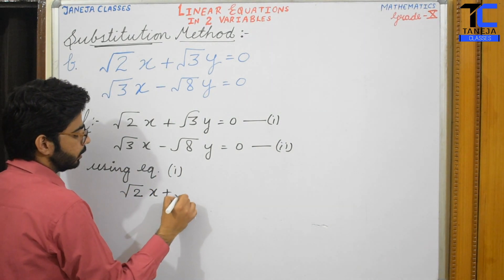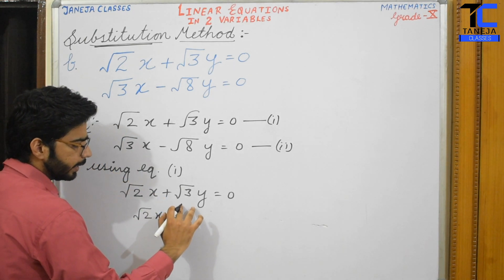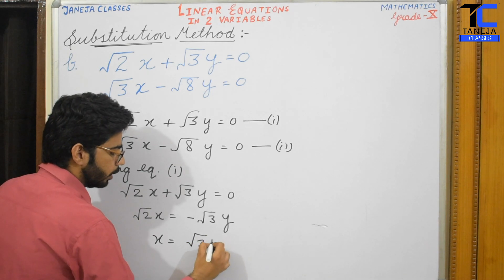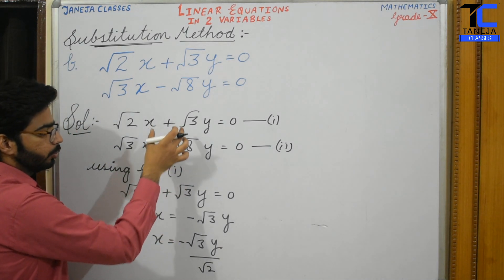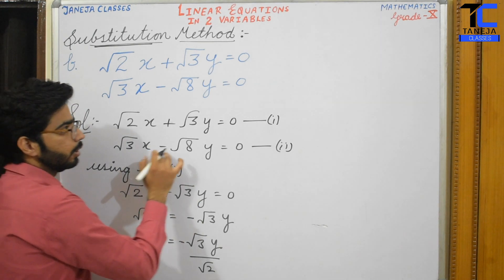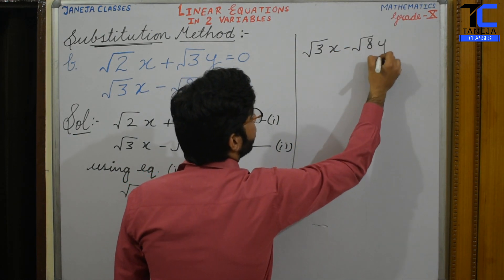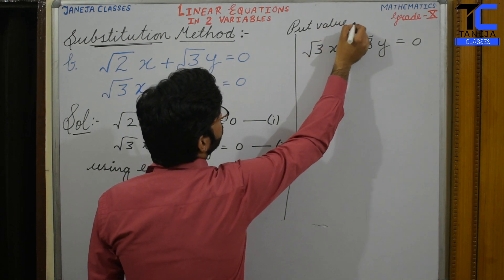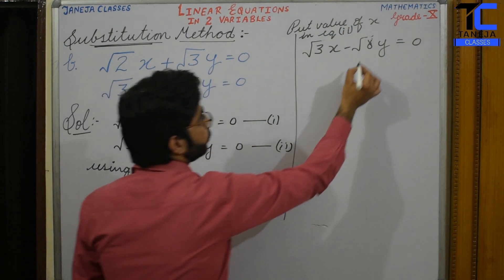From equation 1: root 2 times x plus root 3 times y equals 0. Taking root 3y to the right-hand side, the sign changes: root 2 times x equals minus root 3 times y. So x equals minus root 3y upon root 2. Now we put this value of x into equation 2. Equation 2 is: root 3 times x minus root 8 times y equals 0.